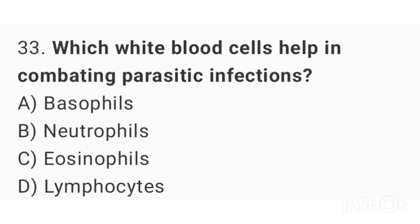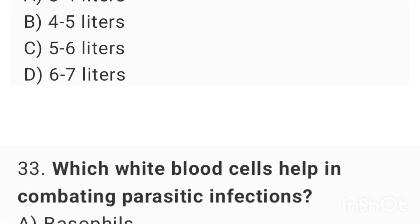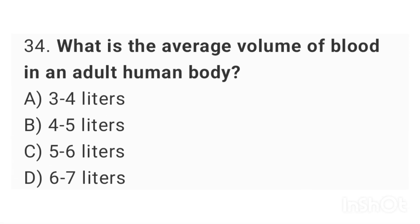Question number 33: Which white blood cells help in combating parasitic infections? The right answer is option C: eosinophils. Question number 34: What is the average volume of blood in an adult human body? The right answer is option B: 4 to 5 liters.